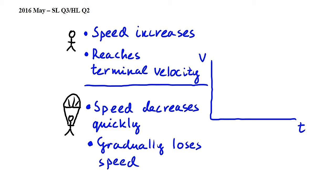In this question, we have to decide how the velocity-time graph looks like for a parachutist. Let's see step by step what happens to this parachutist during its fall. First, as she jumps out of the airplane, her vertical speed increases very quickly, which looks like this on the graph.